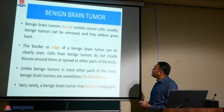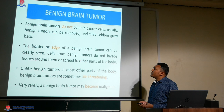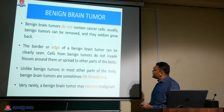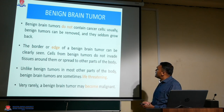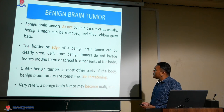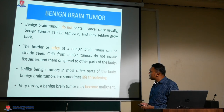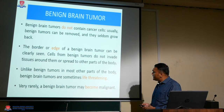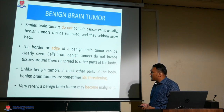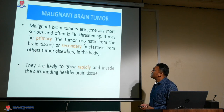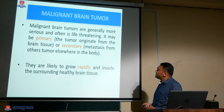Benign brain tumors don't contain cancer cells. Usually they can be removed and seldom grow back. The borders of a benign tumor can be clearly seen, and cells from benign tumors don't invade surrounding tissue or spread to other parts of the body. Unlike tumors in most other parts of the body, benign brain tumors are sometimes life-threatening, and very rarely a benign brain tumor may become malignant.